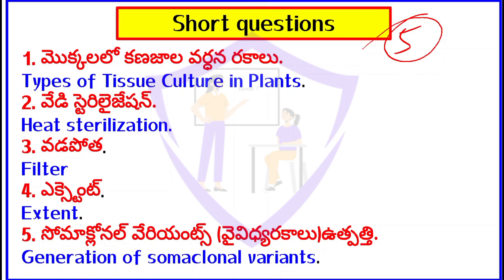Types of Tissue Culture in Plants. Body Sterilization, Heat Sterilization, and third one: Filter Sterilization. And Extent — Somaclonal Variants, and various types of mutations. Generation of Somaclonal Variants.